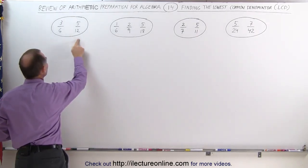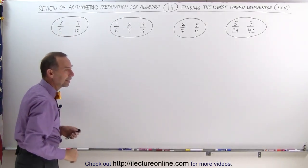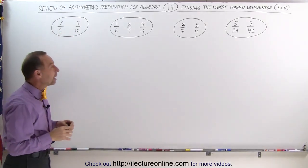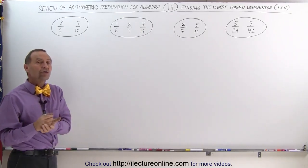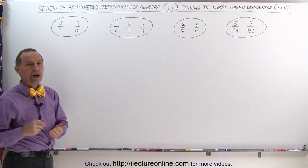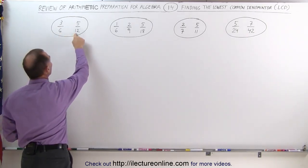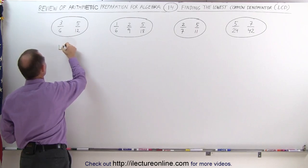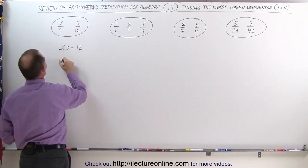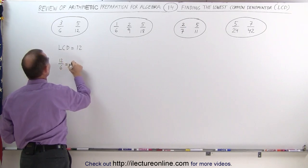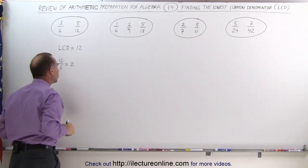For example, if we look at these two denominators, notice that 6 fits evenly into 12. If all the other denominators fit evenly into the largest denominator, then the largest denominator becomes the lowest common denominator. In this case, since 6 fits evenly into 12, the LCD is equal to 12, because 12 divided by 6 equals 2, which is an integer. That means 6 fits evenly into 12.